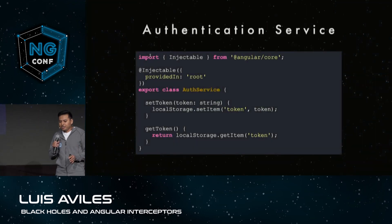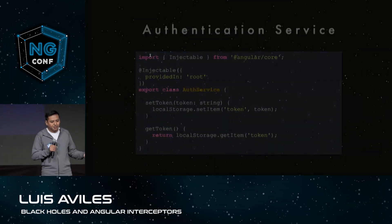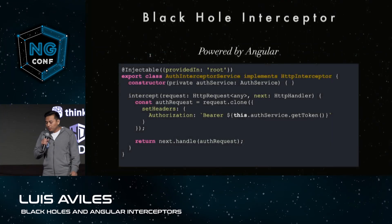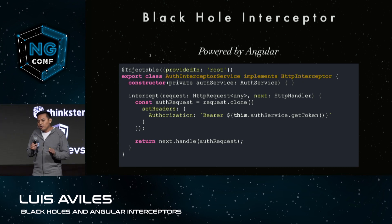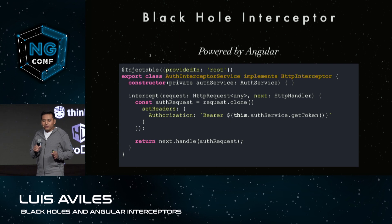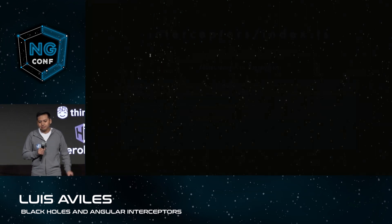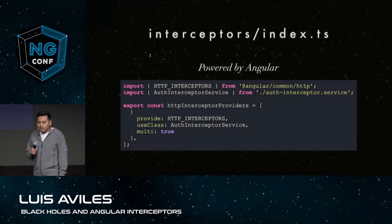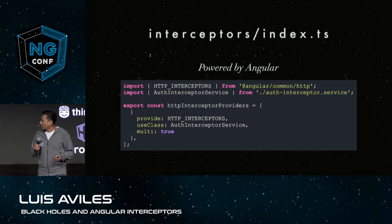The first step is to implement an authentication service, which is a class that is going to provide a way to set and get the access token. The next step will be to define our black hole interceptor that needs to implement the HTTP interceptor interface. That means we are going to have an intercept function where we can create a clone of the original HTTP request so that we can add the authorization header to it. As a good practice, we can have a TypeScript file where we define an HTTP interceptor providers array and add our first Angular interceptor to it.